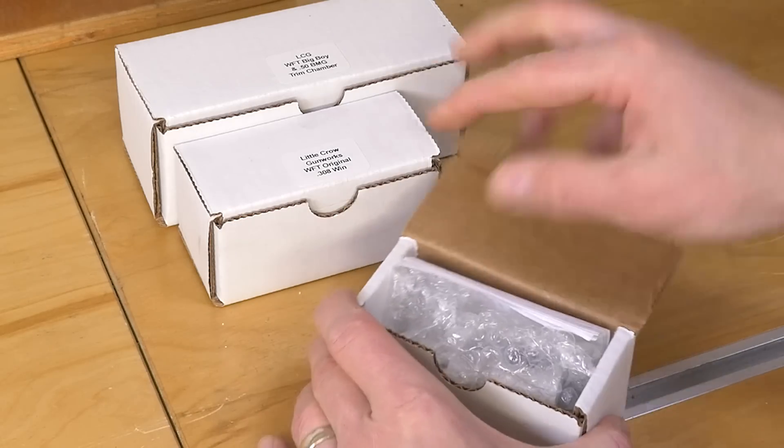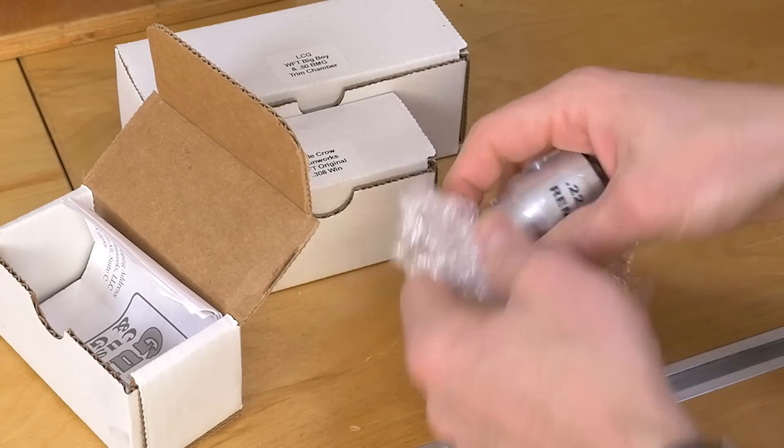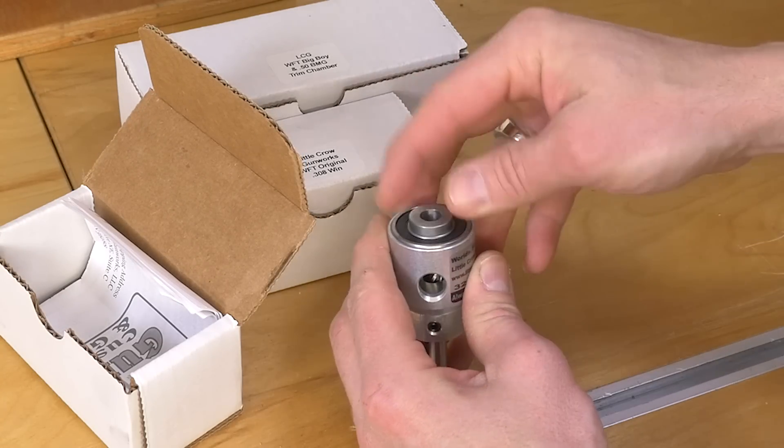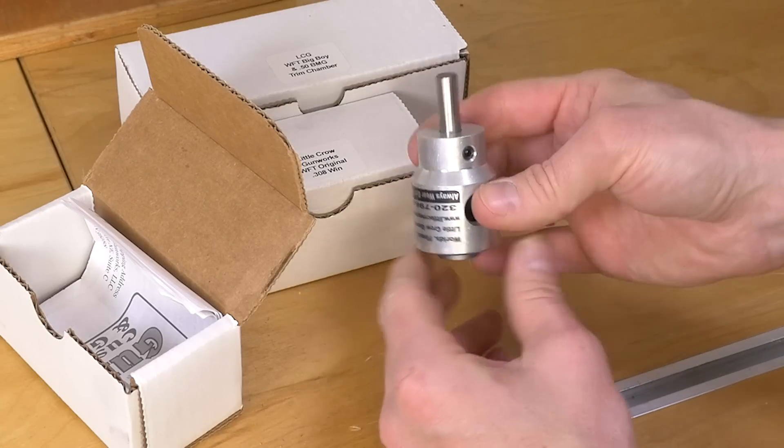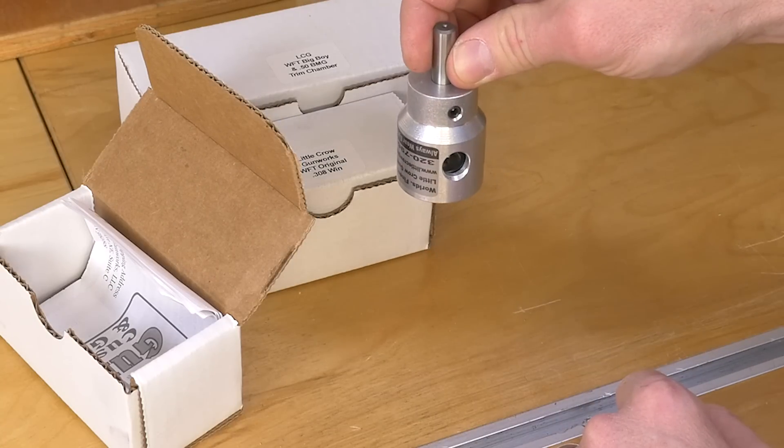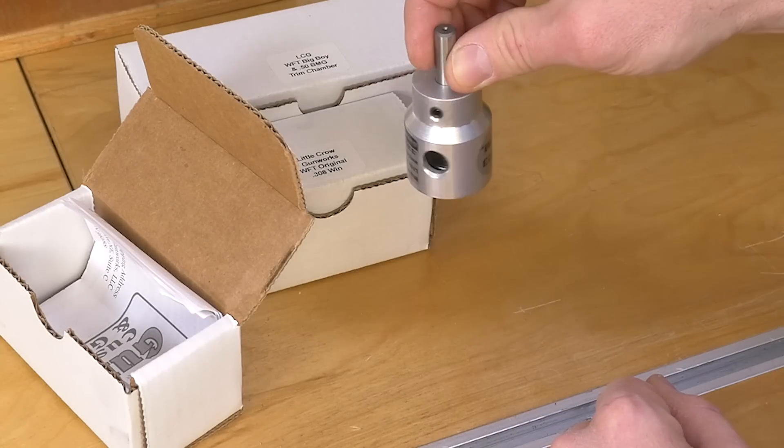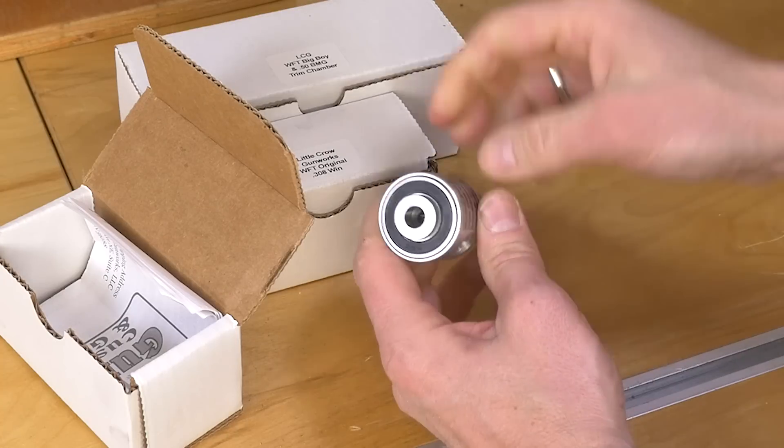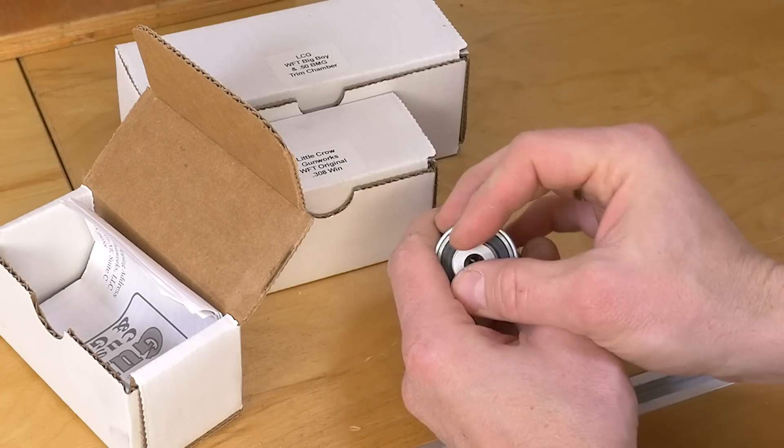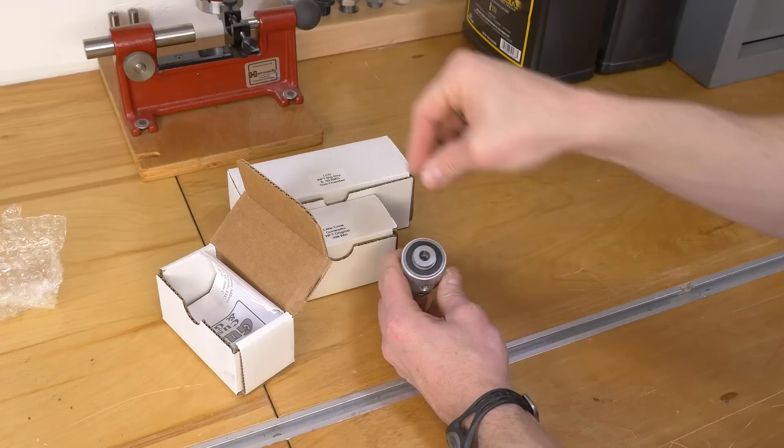Let me show you what's in the box. The tool comes bubble wrapped. It's very nice packing. This is a brand new 223 World's Finest Trimmer that I haven't even used yet. Here's what's cool about it is you chuck up the trimmer in a piece of power equipment. It could be that power drill or lathe or milling machine or drill press. The whole body rotates but the insert where the head spacing takes place stays stationary and rotates within the body so it's stationary with respect to the brass that you're trimming.